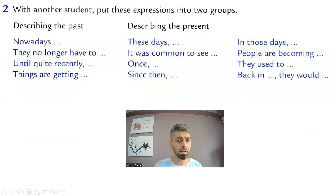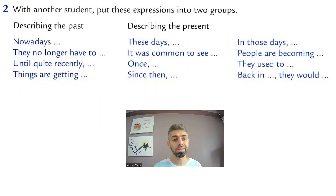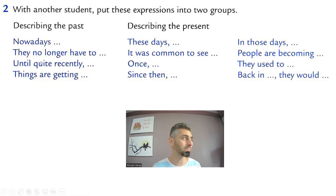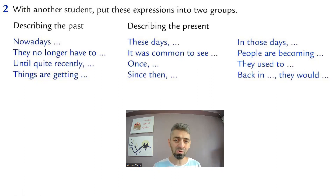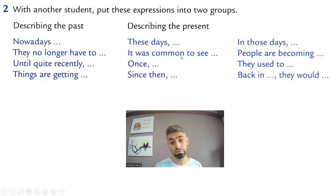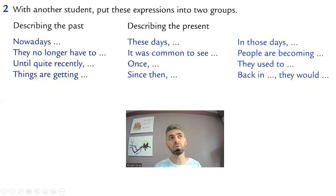Let's come to these expressions — this is the focus of today. We should know which expressions are used to talk about the past and which are used to talk about the present. 'Nowadays' is present. 'They no longer have to' is present. 'Until quite recently' refers to the past — not very long ago. When you use present continuous, you are describing the present. 'These days' describes the present. 'It was common to see,' 'was popular,' 'was common to see' — this is past. 'Once' is the past, and when we use 'once,' we use simple past — it's considered a specific time in the past, so we say 'once' and use simple past.